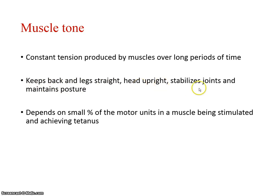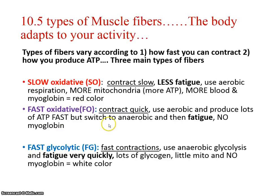Your back and legs stay straight, your head is upright, and joints are stabilized. A small percentage of motor units in the muscles — especially the back and posterior aspect of the body — are being stimulated, achieving tetanus, and then they trade off. Once those fatigue, they trade off with another group. So you never actually realize fatigue in the back muscles because there are so many small motor units cycling. And it's isometric — you're not changing the length of that muscle.